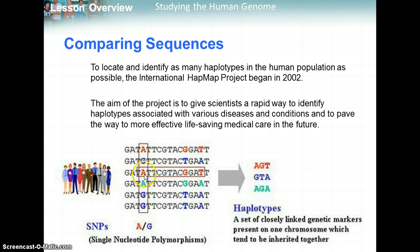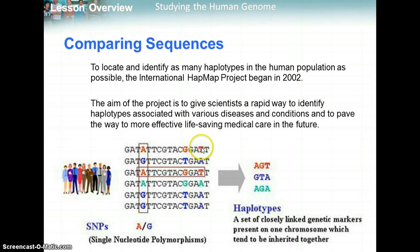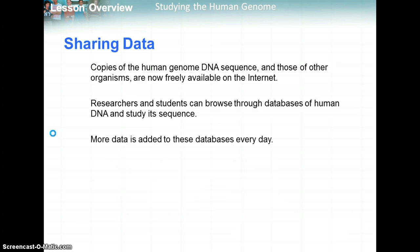To locate and identify as many haplotypes as possible, there was the HapMap project in 2002. The aim of this project is to give scientists a rapid way to identify haplotypes associated with various diseases and conditions, and to pave the way to more effective, life-saving medical care. This will help pinpoint people with certain genetic disorders who share a certain haplotype, which can then be used to identify the condition and hopefully find a cure or treatment for it.